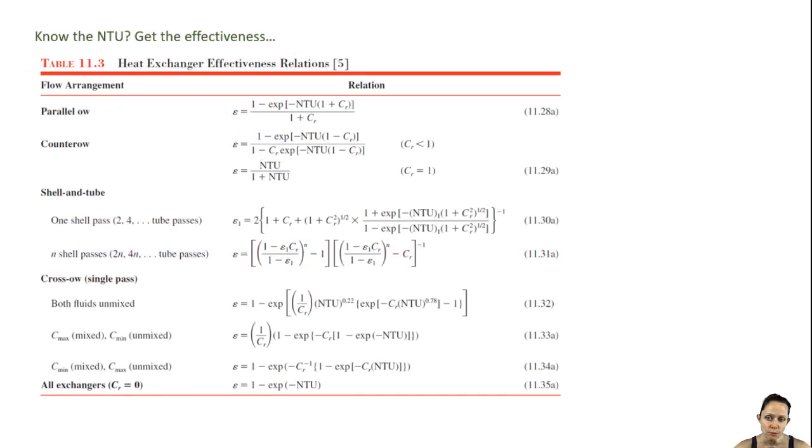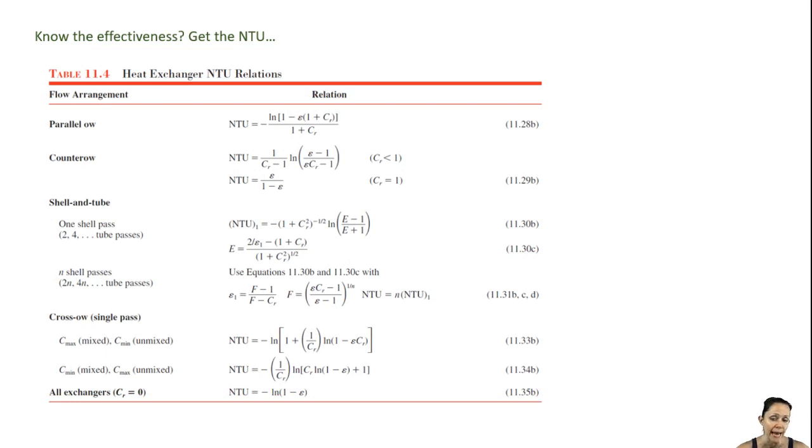Table 11.3 in your book allows you to, for a given heat exchanger type—parallel flow, counter flow, etc.—calculate the Effectiveness based on the number of transfer units and the specific heat ratio. Table 11.4 allows you to work backwards and calculate the NTU based on the Effectiveness and the specific heat ratio.